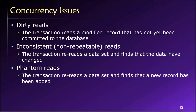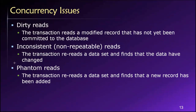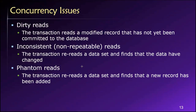These three concurrency control problems are: dirty reads, inconsistent reads — also called non-repeatable reads — and phantom reads. These are the three possible concurrency control problems that we need to handle or consider handling. Let's talk about each of these in turn.